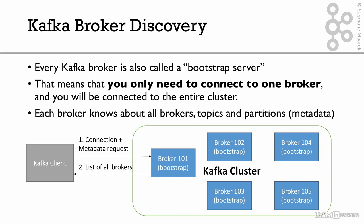Broker 101 will respond and say, 'Here's your metadata,' including the list of all the brokers and their IPs. The client receives this and when it starts producing or consuming, it knows exactly which broker it needs to connect to automatically. That's how broker discovery works.